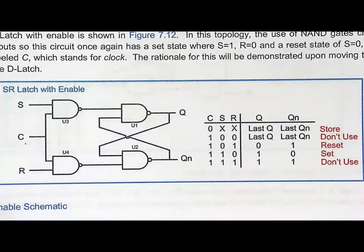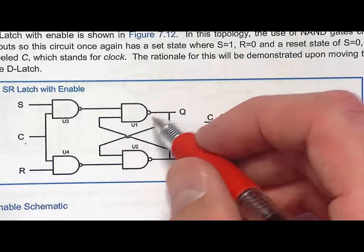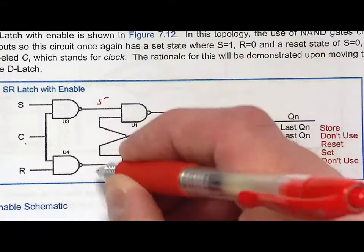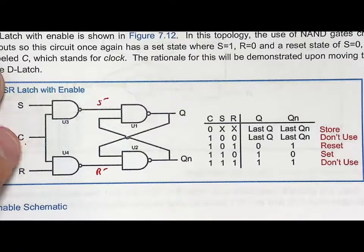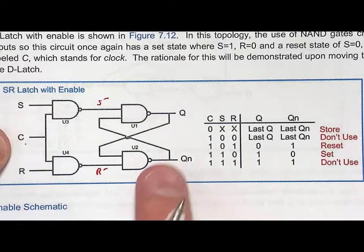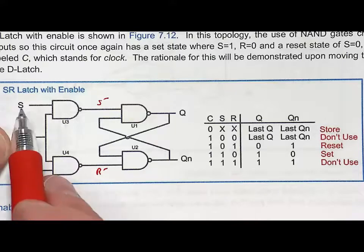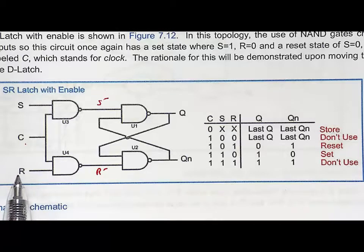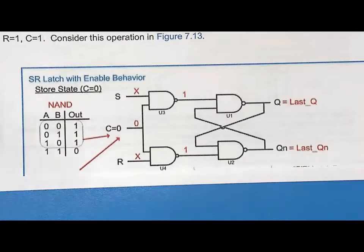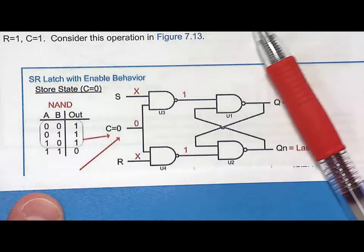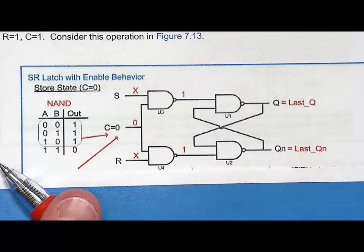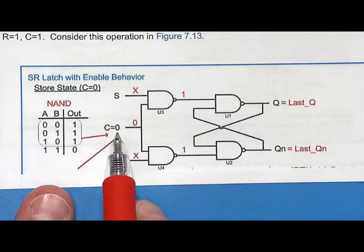If you think about the way we had drawn the S-bar R-bar Latch before, we had S-bar here and R-bar there. The way these NAND gates work, we're going to be able to put this into a store state, and when it's not in a store state, these NAND gates will invert S and R so that they have the same polarities as before. Let's go through how it works and look at what happens when this thing stores information. We need to remember what the NAND gate truth table is, and look at the store state where C equals zero.